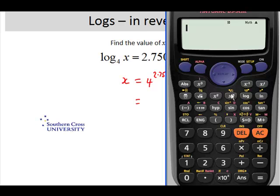So that means we'll be using this key here, which means that we need to put in our base first, 4, and then our raising to the power key, 2.7502 equals. And you can see that we've got 54.27 as an answer would be fine.